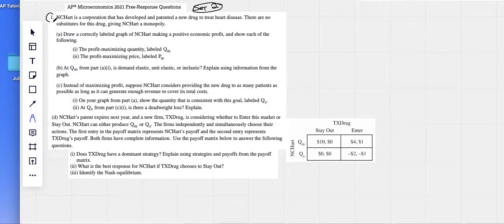Notice that there's a monopoly question here and then it flows into an oligopoly question. So we have really two different parts as one, making it a little bit more complicated, but not too bad. The monopoly question is fairly simple. Heart is a corporation that has developed and patented a new drug to treat heart disease. There are no substitutes, so they have a monopoly.